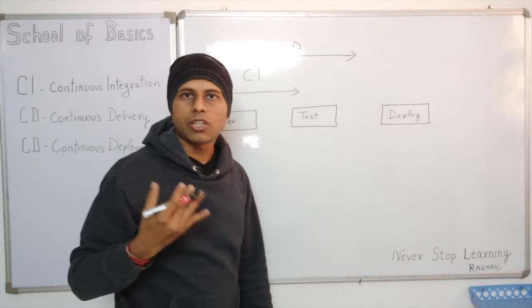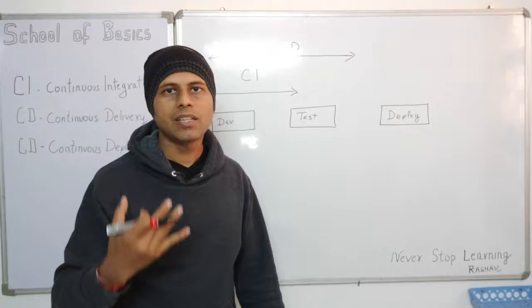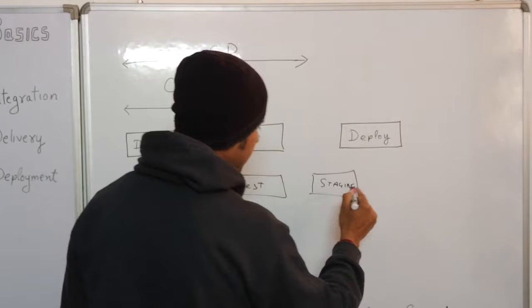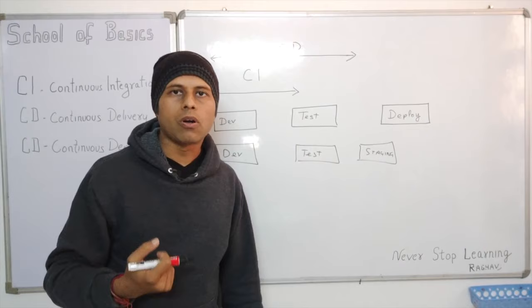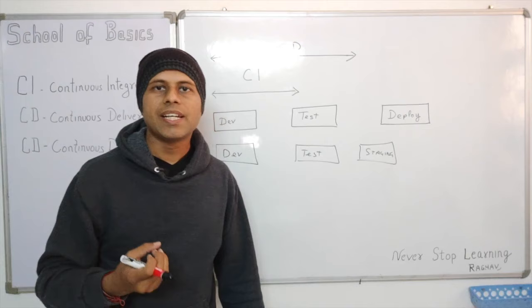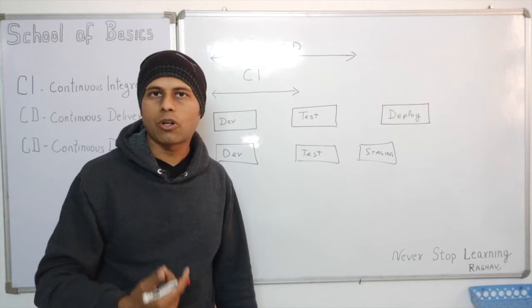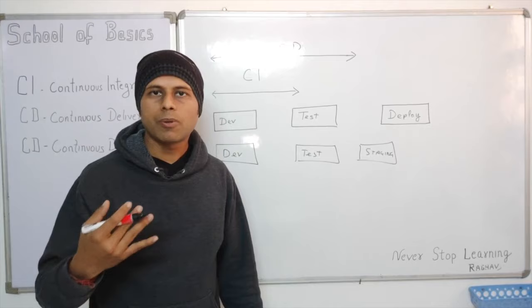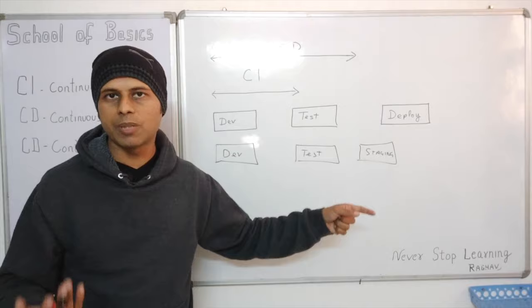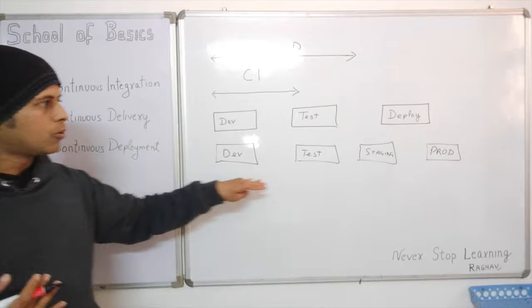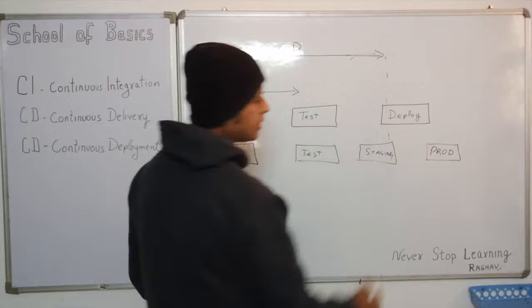To make it even clearer, let's include the environments. We have a dev environment, a test environment, and a staging environment. The staging environment is a production-like environment, sometimes called a pre-prod or pre-production environment. The goal is to keep this environment exactly like a copy of production so that before deploying anything to production we can check it on the pre-prod or staging environment.